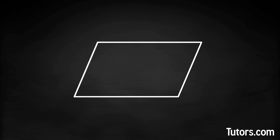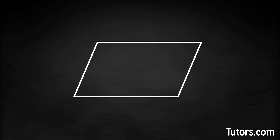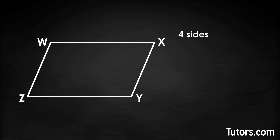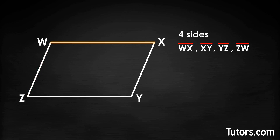Next, we will label our parallelogram. Start at any vertex — a corner — and write a capital letter, then move either clockwise or counterclockwise to the next vertex and use a different capital letter. For our parallelogram, we will label it WXYZ, but you can use any four different letters. The four line segments making up the parallelogram are WX, XY, YZ, and ZW. Notice that line segments WX and YZ are congruent.